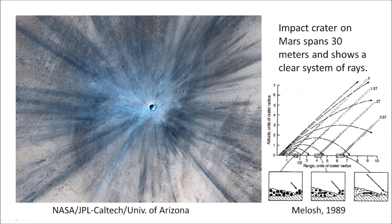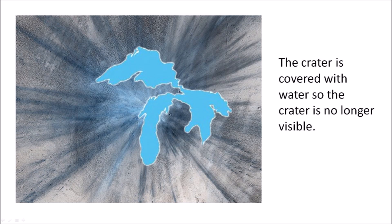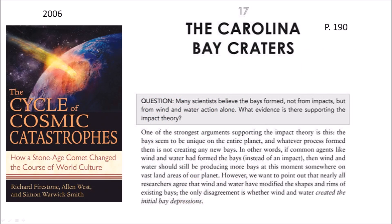The 1989 book by Professor Jay Melosh explains that debris ejected from an impact crater follows ballistic trajectories from its launch position. The innermost ejecta are launched first and travel fastest, while ejecta originating farther from the center are launched later and move more slowly. The ejected material can form a system of rays and secondary impacts radiating from the impact point, as illustrated by an impact crater on Mars with a diameter of 30 meters. If the crater is covered with water and no longer visible, we can still determine the impact location from the orientation of secondary features. A book by Firestone, West, and Warwick Smith in 2006 actually proposed that the Carolina Bays were formed by impacts.